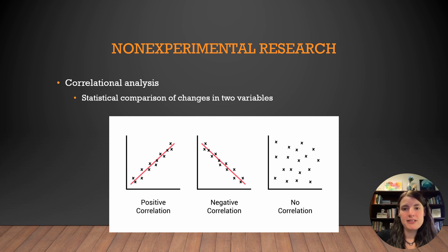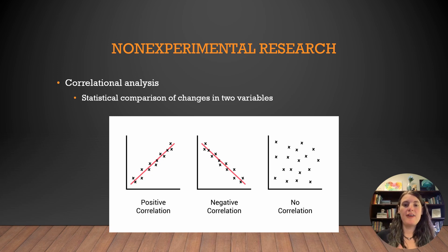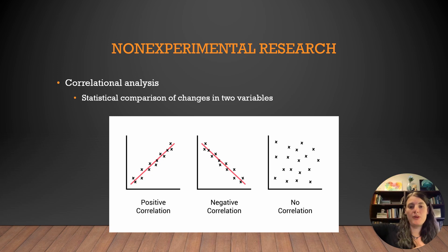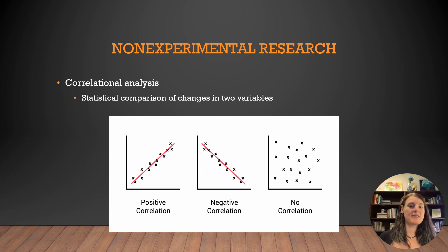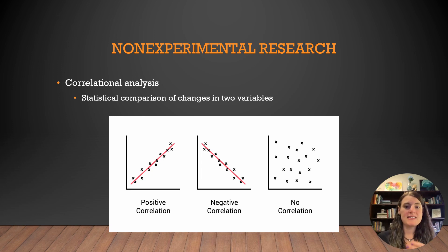Correlation analysis is one type of non-experimental research design. Here, the goal is to analyze how two variables change in relation to one another. On these graphs, variable A is represented by the x-axis, or the horizontal line going across. Variable B is represented as the y-axis, or the vertical line going up the graph. When there's a positive correlation between A and B, it means that as variable A gets bigger, so does variable B. A negative correlation means that as variable A gets bigger, variable B gets smaller. And no correlation means there's no relationship — variable A and B values occur independent of one another. What makes this design different from an experimental design is that there is no attempt by the researcher to control other potentially important variables; we're simply looking at whether there's a relationship between variable A and variable B.